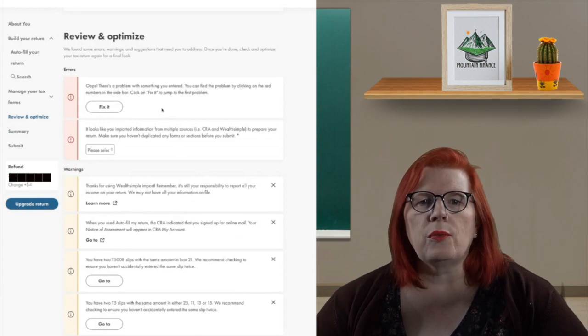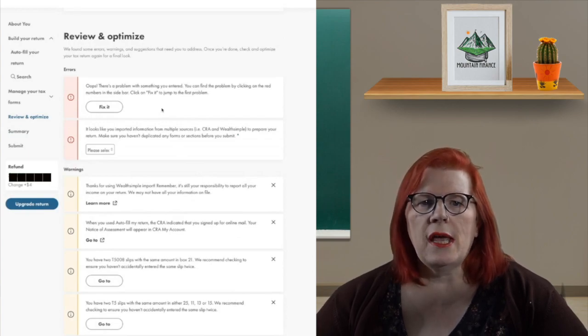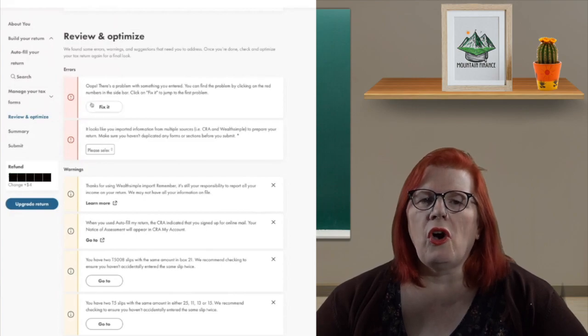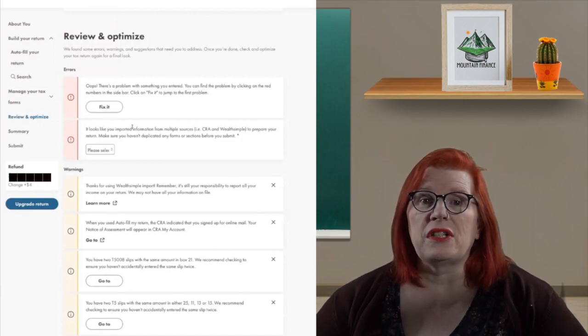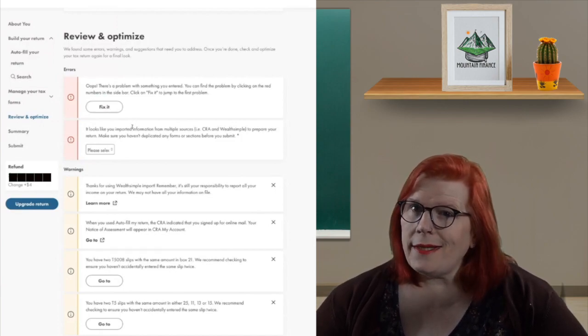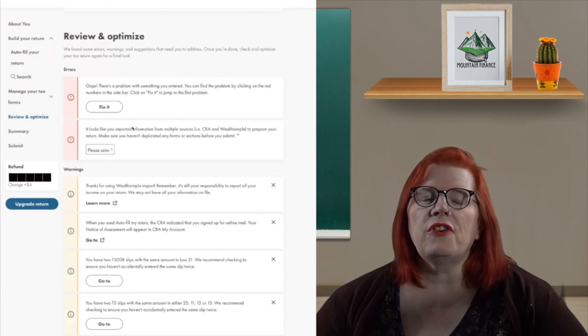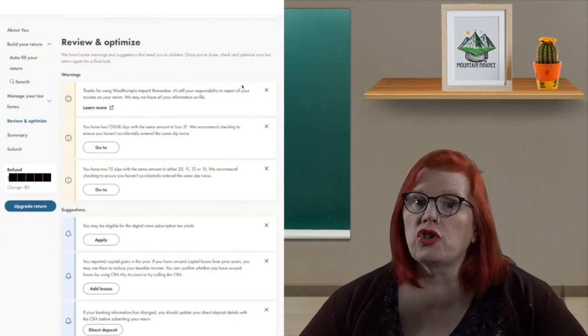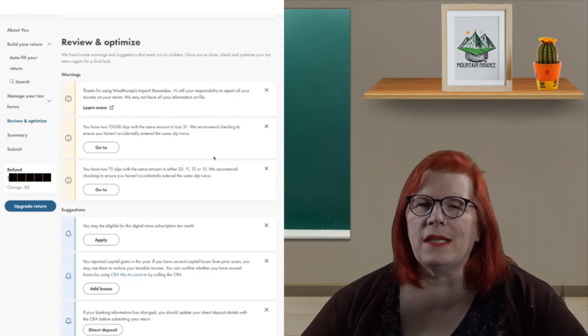It will bring you to the Review and Optimize page. Anything listed at the top in red is things that need to be corrected. And there will probably be a few. Sometimes the imports are not a hundred percent perfect, but they're usually super tiny little errors that are super easy to fix. After the red sections, there are some recommendations that are not mandatory, but still worth looking over. And lastly, some other options like making sure your direct deposit is up to date.